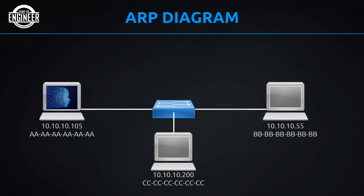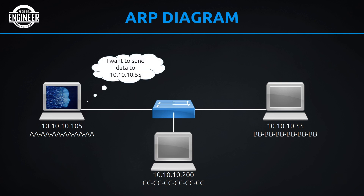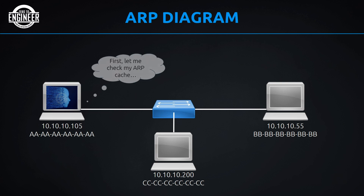Here is the ARP request diagram. The host on the left wants to send data to 10.10.10.55 on the right. We know the right host's MAC is all Bs, but the left host at 10.10.10.05 does not know that MAC address. So the left host checks its ARP cache — no MAC address found — and decides to send out a broadcast ARP message.